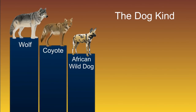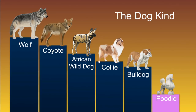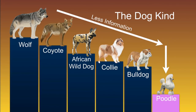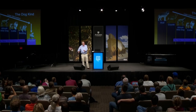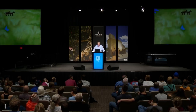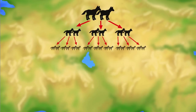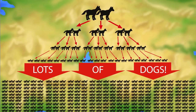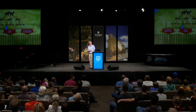When you look at what's happening with the dog kind and you get different species, what's happening overall is a loss of information. A poodle is sort of the end of the line in dogs — if it lost any more information, it'd be gone. We don't know how many dogs God made originally. Let's say he made two dogs, they had kids, they had kids, and we end up with a typical homeschool family of dogs. So, how do we get the different species?